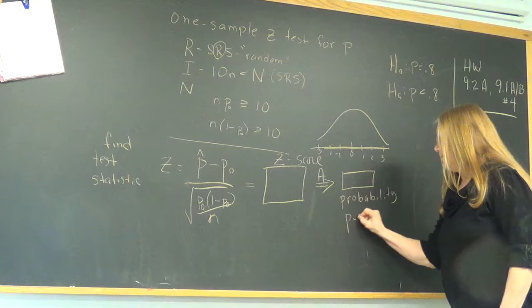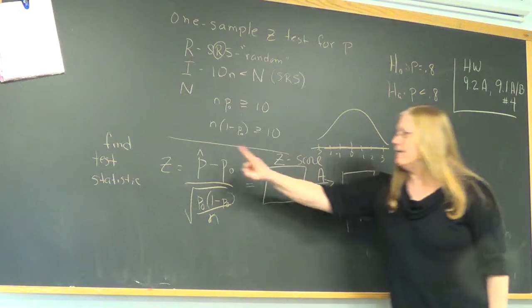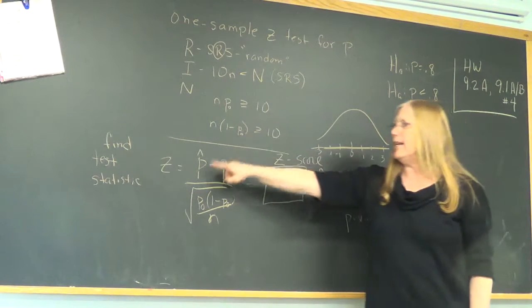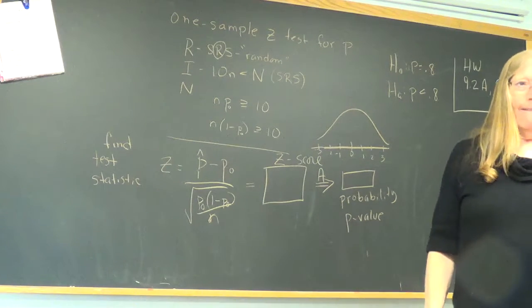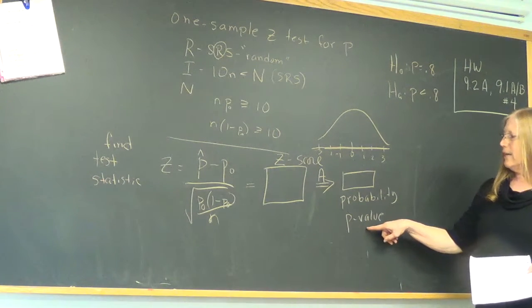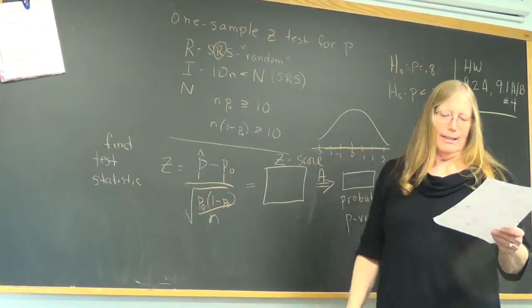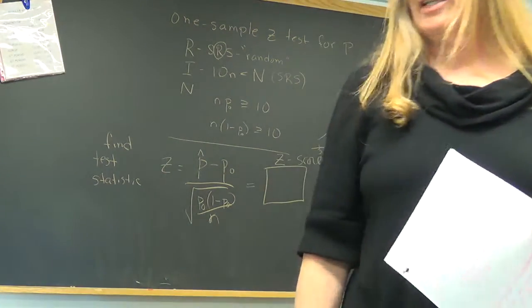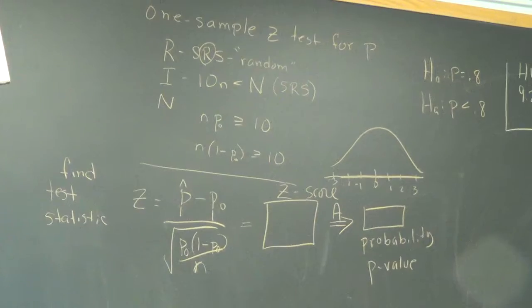So this will be your probability, the whole thing we're looking for. And that will be your P-value. Because the P-value is a probability. So what is the probability of? It's the probability of this happening when this is considered true. Remember that. The P-value is the probability of your sample result happening when your null hypothesis is true.